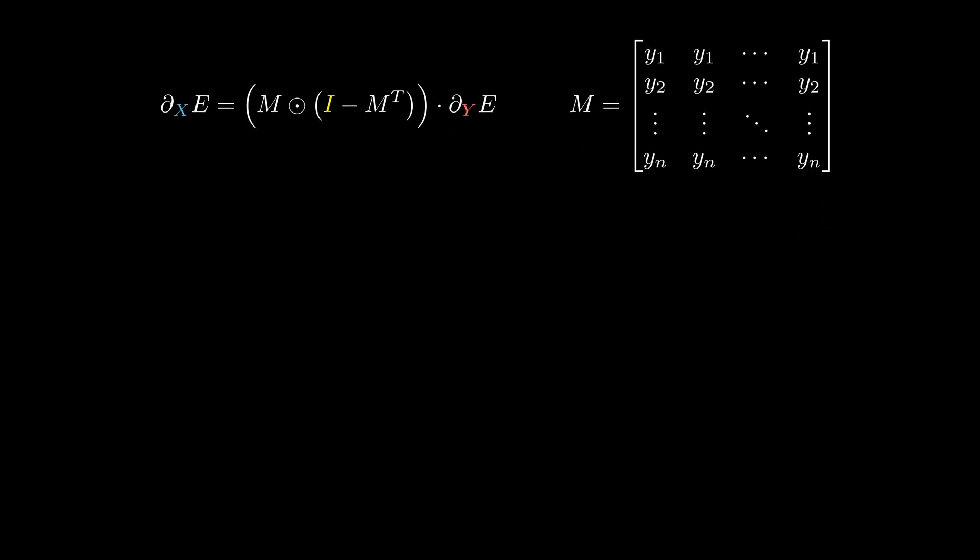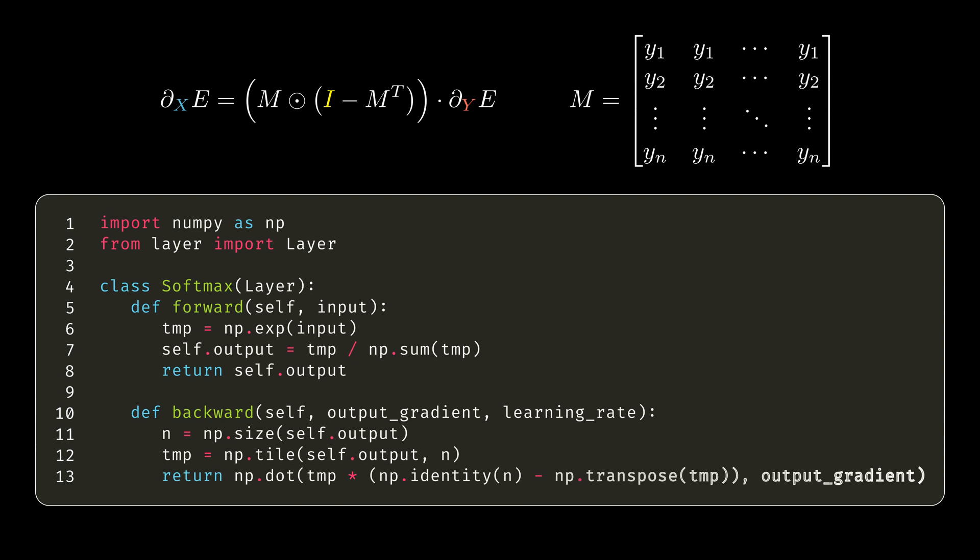Let's implement the backward method. We start by getting the size of the output vector. Then, we create the M matrix, which is simply the output vector, replicated n times. This is what numpy.tile does.